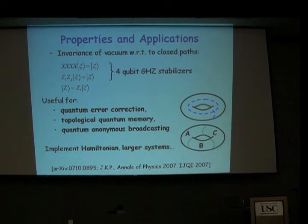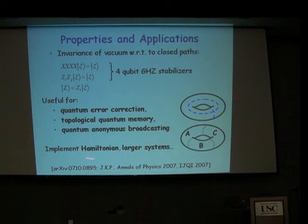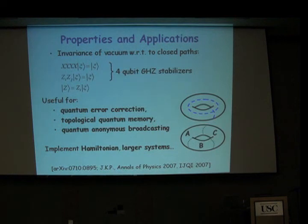Future extensions include implementing larger systems than what we saw, and implementing the Hamiltonian — I believe for one plaquette this is also possible. The Hamiltonian will protect the system from errors. That's all — thank you for your attention.